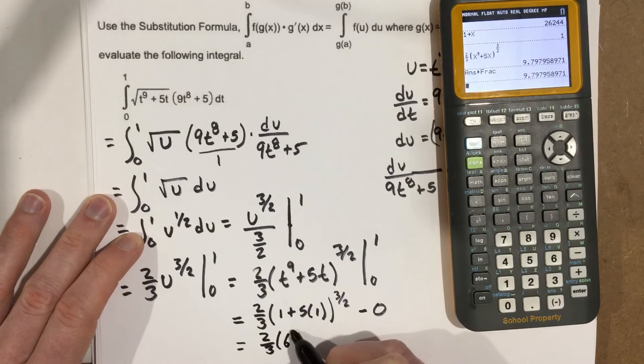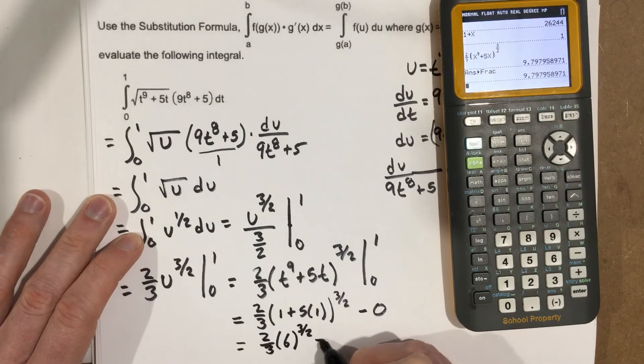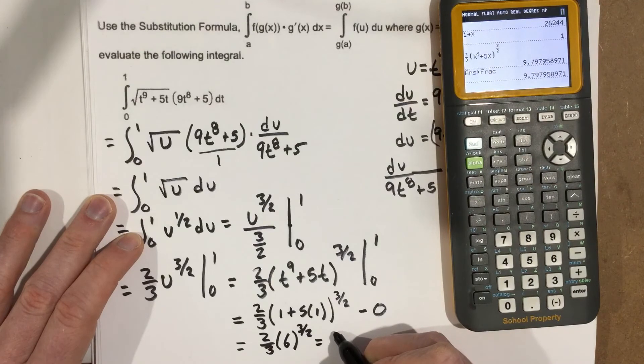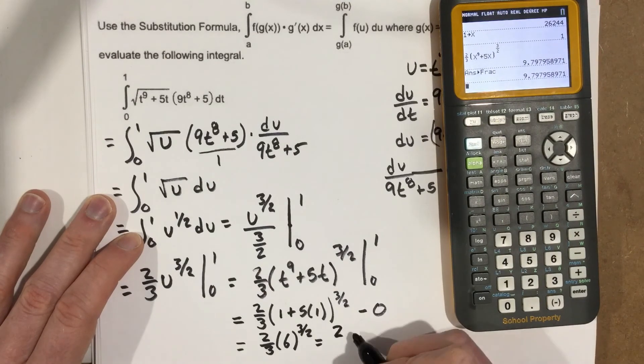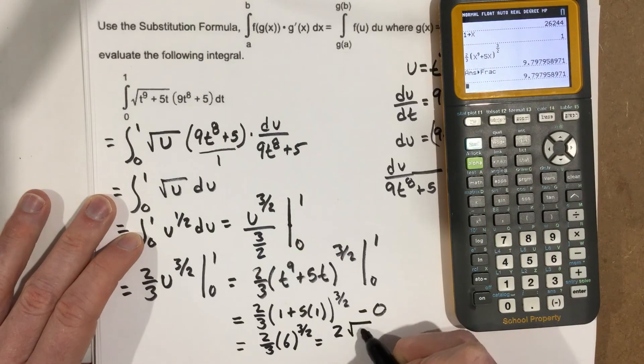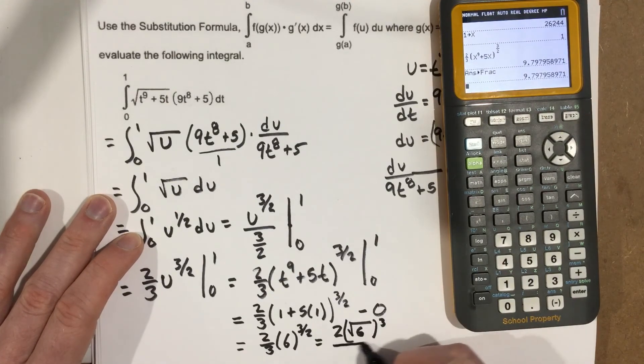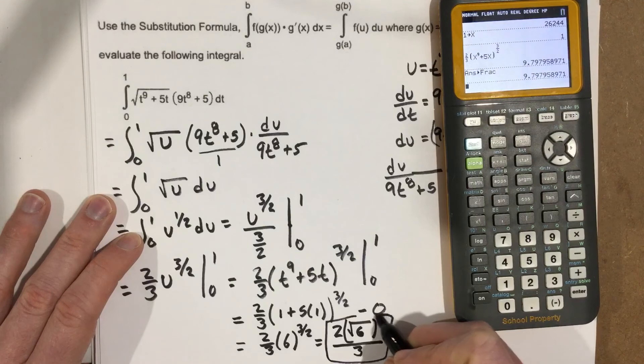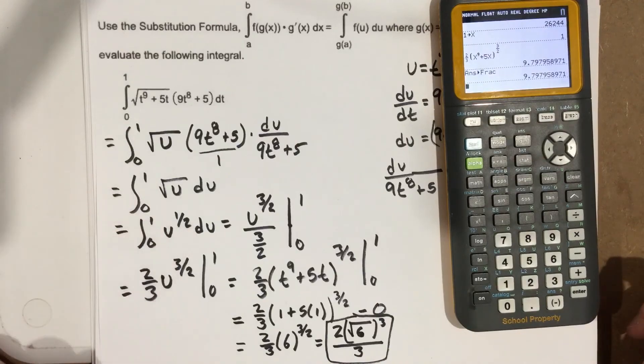Now I can write this as 2/3 times 6 to the 3/2, which is going to give you, if you want to write this in for a solution, maybe you write this as, well, this would be the 2 and to the 3/2 power, it tells you that you have root 6, and that would be to the 3 power over 3. I think this is how you would maybe want to put it into my math lab. I think either one of these answers it's probably going to accept, though. That should be the answer to the problem.